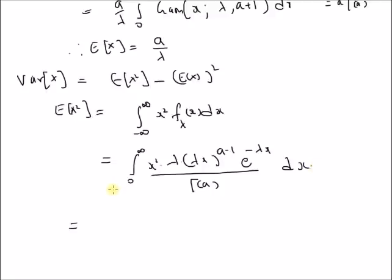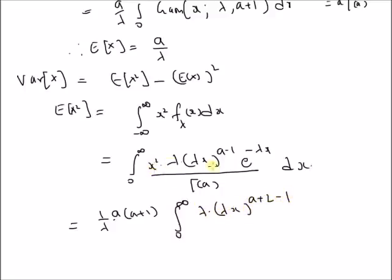As we did for the expectation, we perform similar manipulation: multiply and divide by λ, giving 1/λ, and also multiply and divide by a(a+1). Since we have x² · (λx)^(a−1), the power becomes (λx)^(a+2−1), and the λ factor becomes λ^(a+2−1) with an additional λ² out front. The denominator a(a+1)·Γ(a) equals Γ(a+2). So we have (a(a+1)/λ²) times the integral of a gamma PDF with parameters λ and a+2.